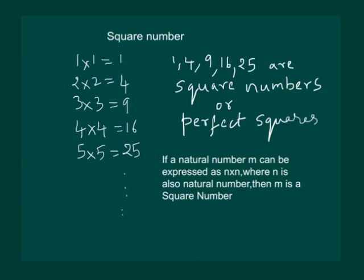In the above examples, 1, 4, 9, 16, 25 denote m. And 5, 4, 3, 2 and 1 denote n.